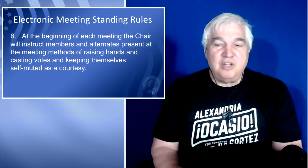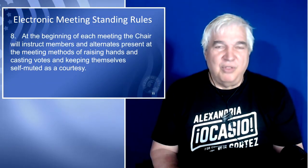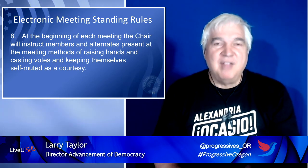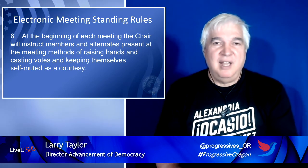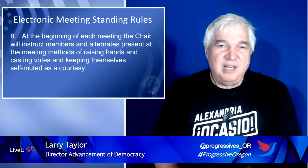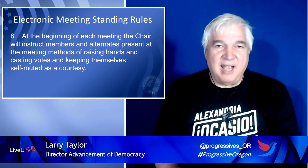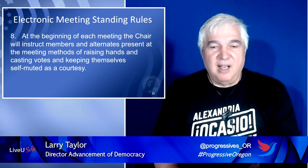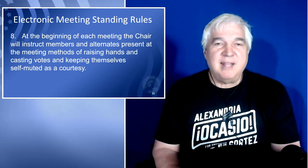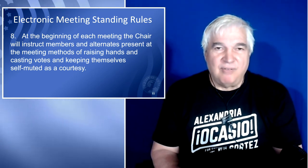The final rule is that at the beginning of each meeting, the chair will instruct members and alternates on the methods of raising hands, casting votes, and keeping themselves self-muted as a courtesy. We often forget that new people have not been instructed on how some of the functionality works, and each technology brings its own set of rules — things like dialing star-nine to raise your hand or star-three to vote yes. These need to be very clear at the beginning of the meeting so that everyone understands how to participate equally. Rule eight is also specified in Robert's Rules of Order, but we wanted to repeat it here so everyone is aware.